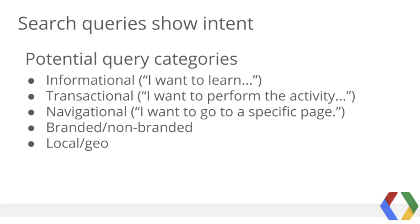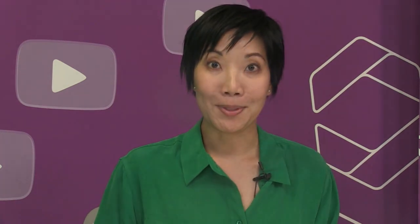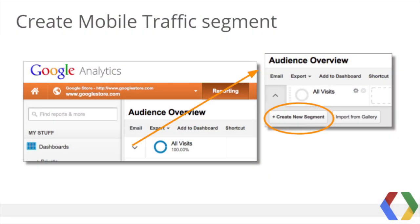Businesses also commonly include categories of branded and non-branded keywords, as well as queries with local or geo intent. To make things more concrete and to dive deeper into the data, I'll reference the e-commerce site the Google Store at www.googlestore.com in many of my examples. Let's begin in Google Analytics and create a mobile traffic segment.